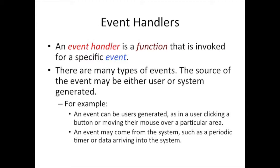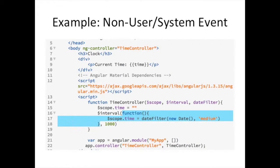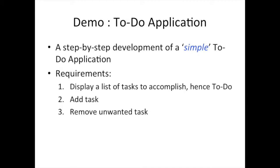There are basically two sources of event handlers: events generated by the user through direct action, and events generated by the system. We've seen system-generated events in the previous example — like on line 16, where we tell Angular to call an event handler every second. What we're going to look at now is how to write handlers for user-defined actions, such as when a user clicks a button.